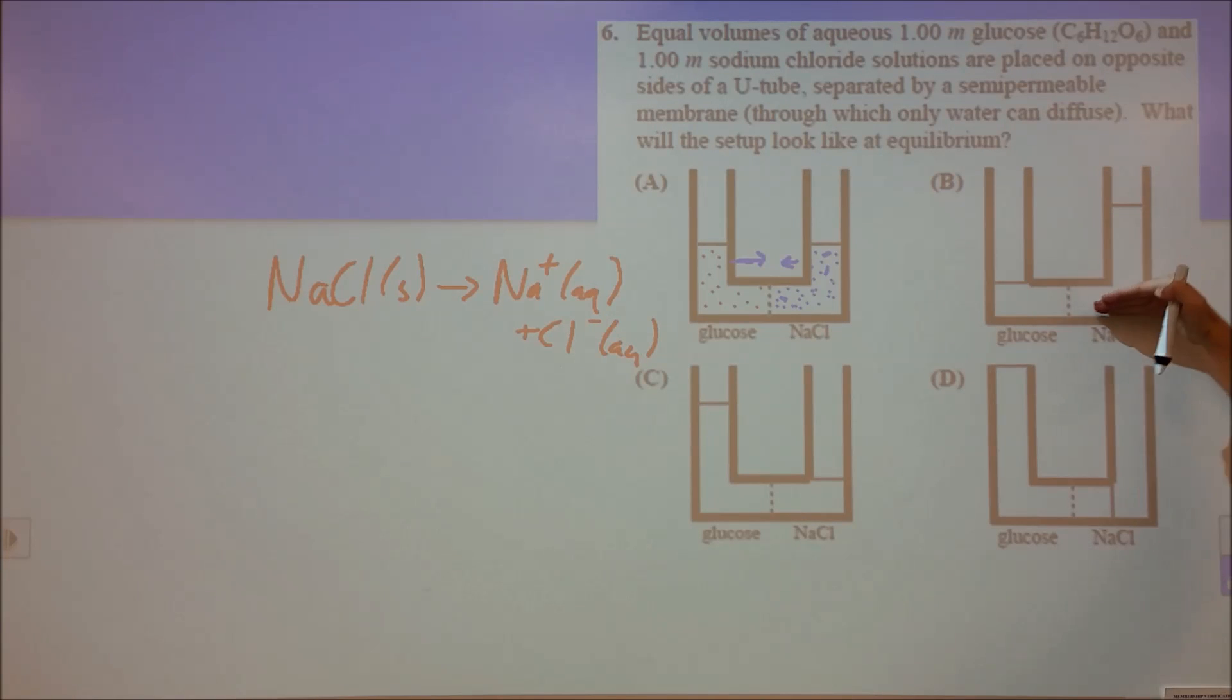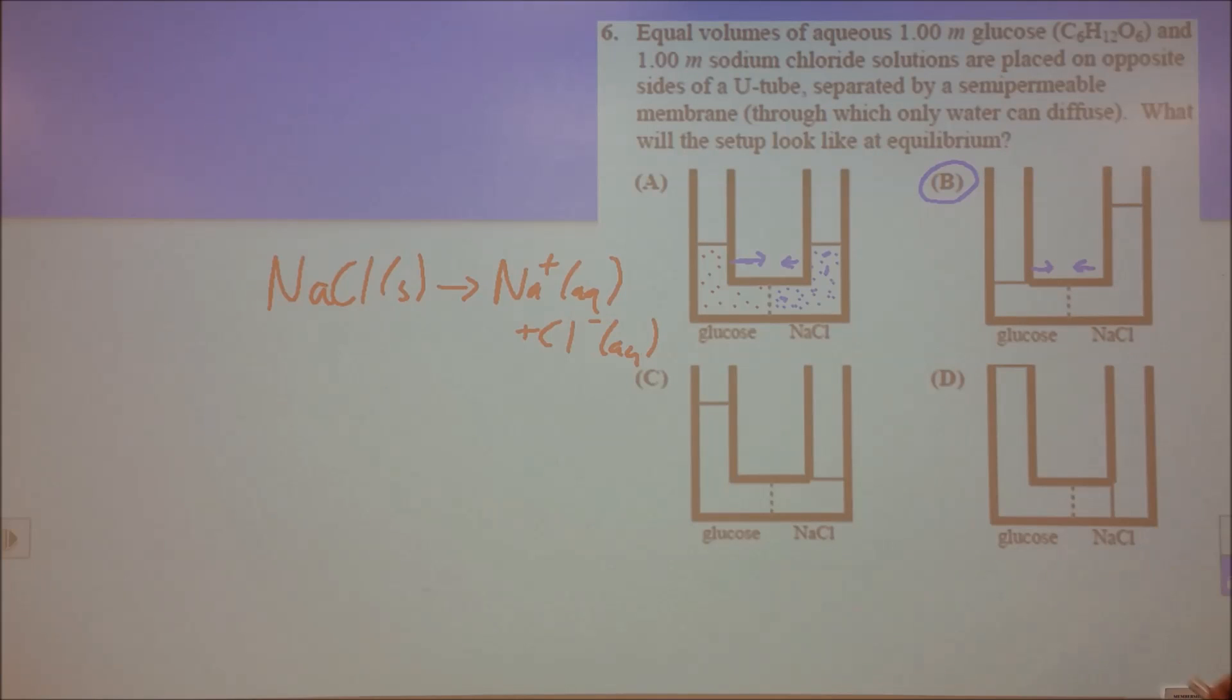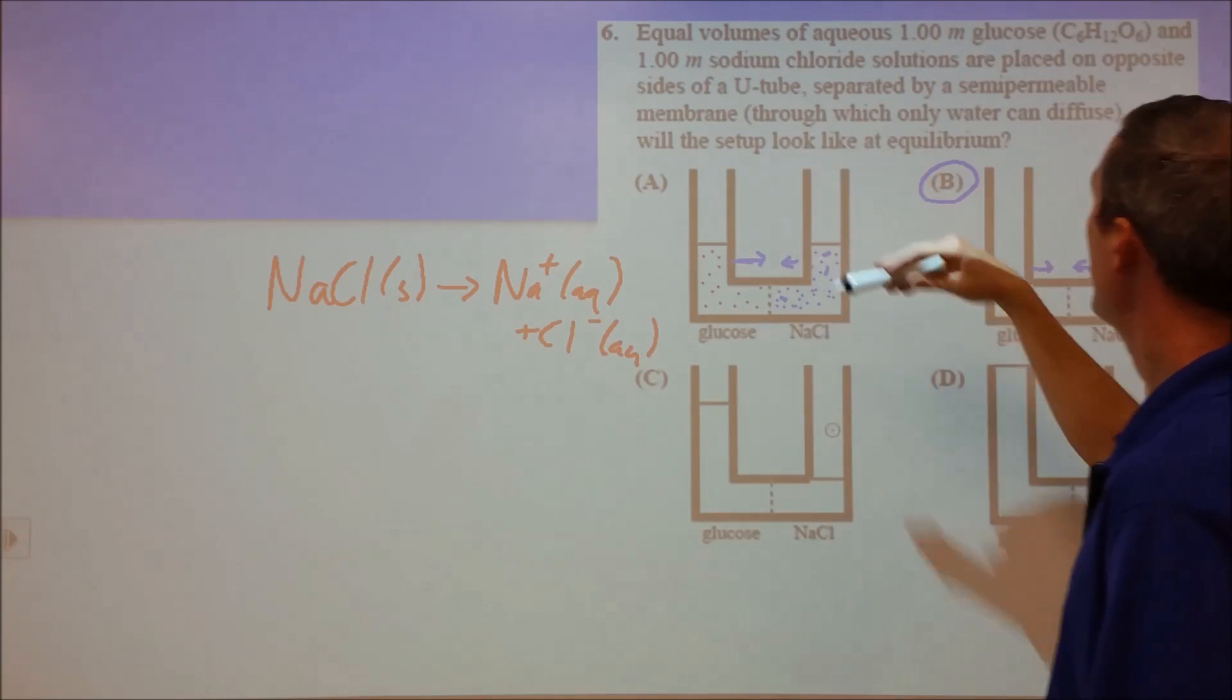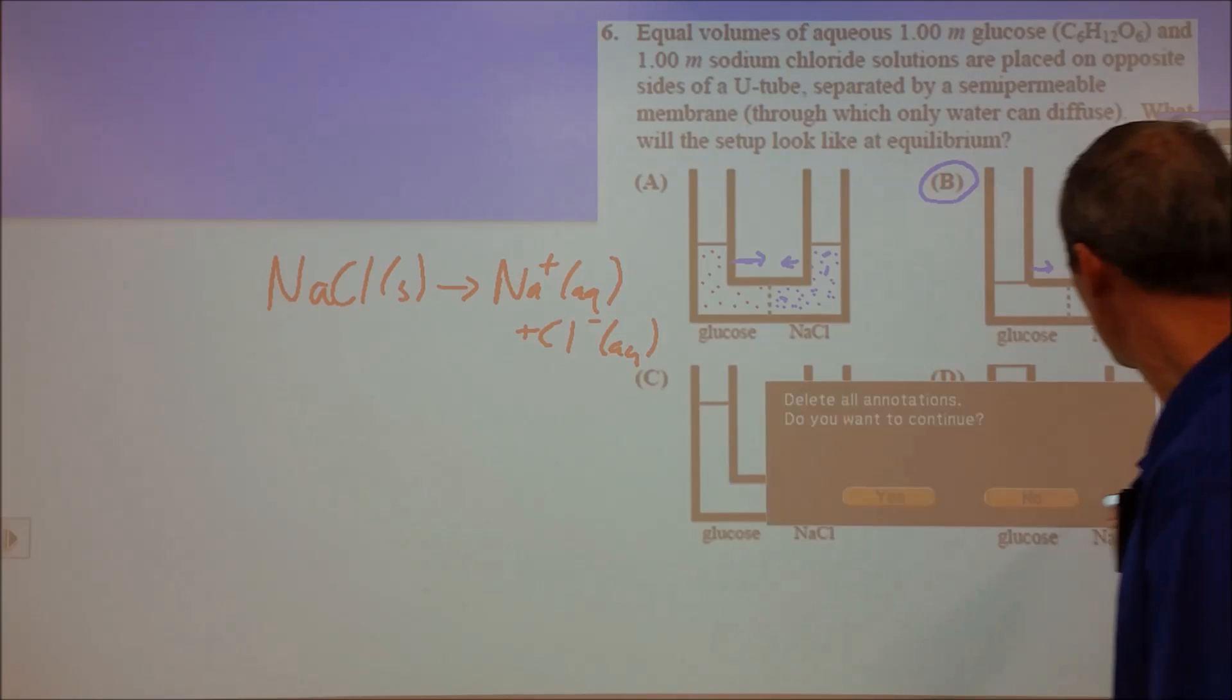The NaCl side sees water transfer slow down even more, so we have a net flow of water towards the sodium chloride side. The NaCl side goes up and glucose side goes down. As that goes up, the increased water weight increases the rate back to equilibrium. There's an osmotic pressure from that buildup equivalent to the differences in molality of particles. B is our answer. We expect NaCl with more particles to increase in water level. C and D show decrease, A is the same. B is our answer.